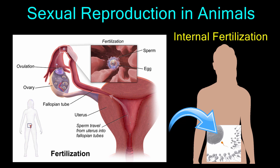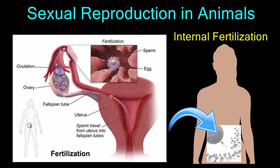Once sperm enter the female reproductive system, they must swim in search of the egg. Internal fertilization is achieved when a sperm penetrates the egg cell. Internal fertilization was an important step in the evolution of land-dwelling animals since it freed them of their dependence on water for reproduction.